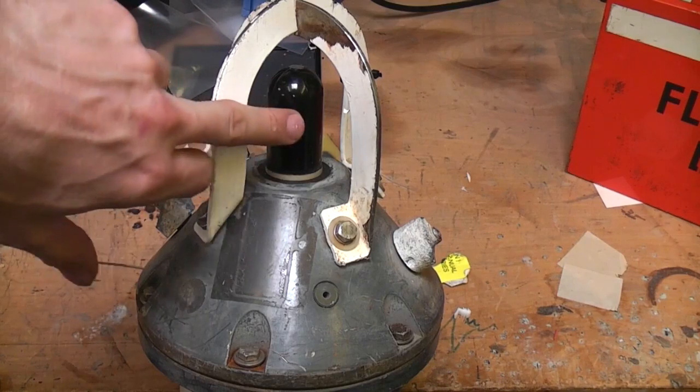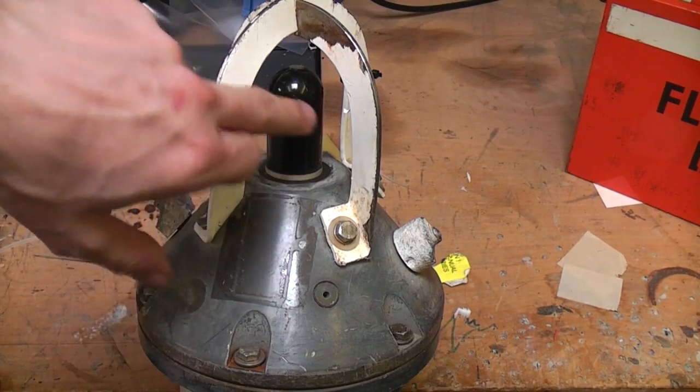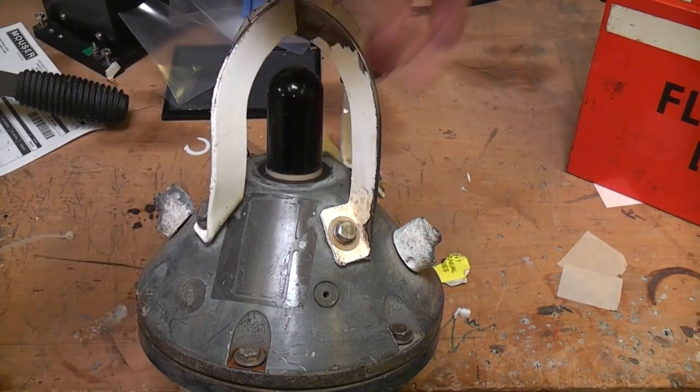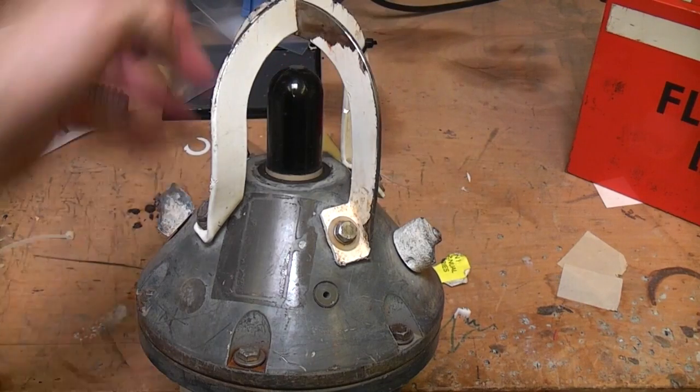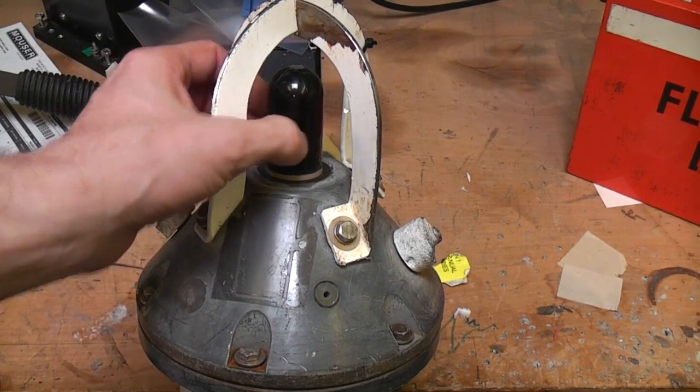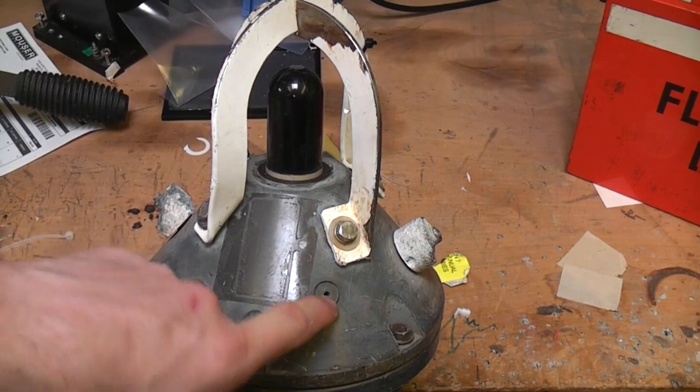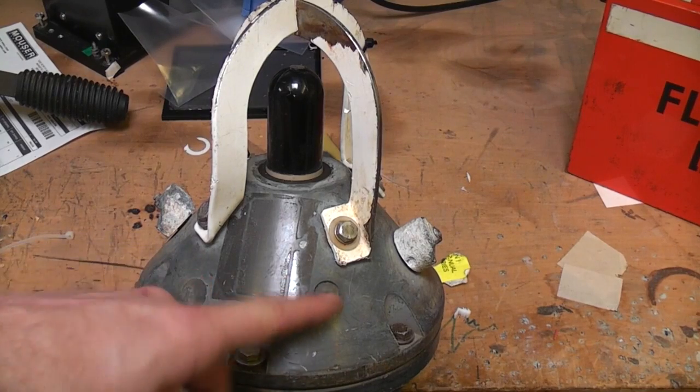At the top this is the actual ultrasonic transducer so this receives the interrogation signal from the device trying to find out where it is and then sends back the signal. This has got a slightly soft rubbery feel to it. Here there's a hole here I'm guessing that's a port for a pressure and or a temperature sensor.